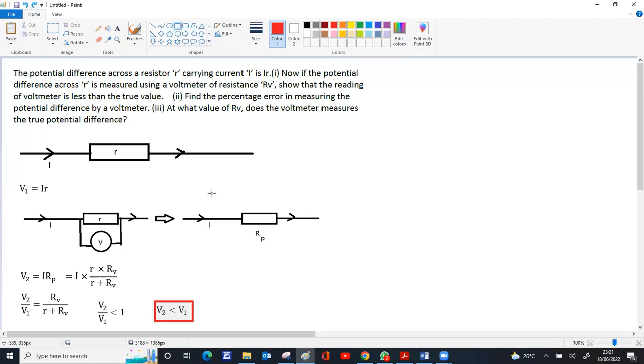Now for the percentage error part. We have a common formula for percentage error: v2 by v1 minus 1, times 100. For v2 by v1, we already have rv by r plus rv. Substituting this,